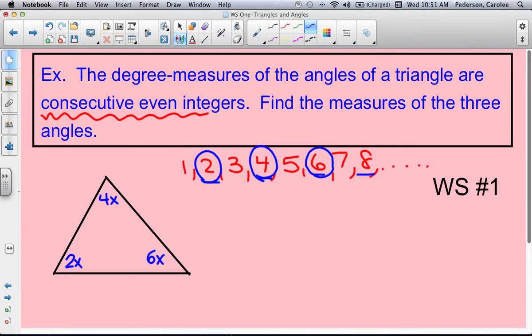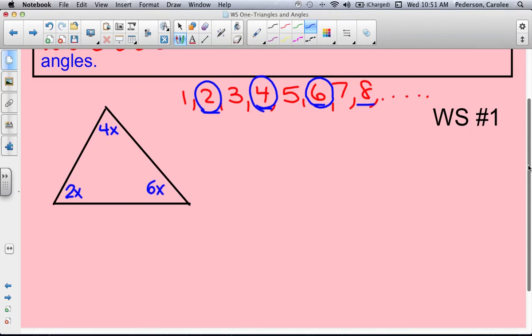The sum of those three angles of the triangle sum theorem says they always add to 180 degrees. So let's set up an equation: 2x plus 4x plus 6x equals 180 degrees.